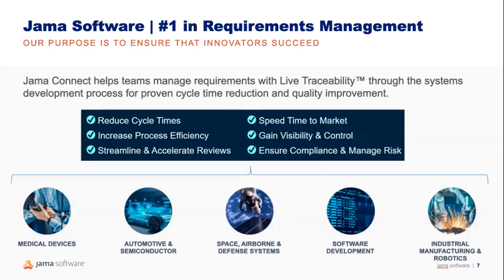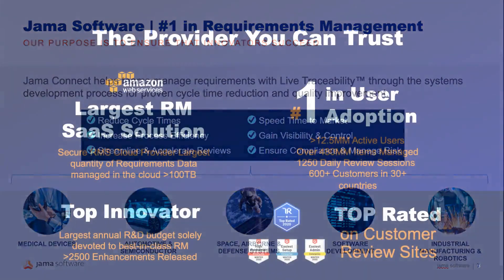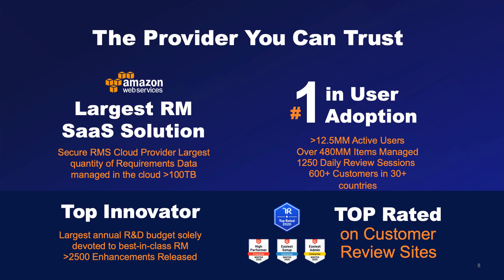I want to briefly provide some context on JAMA Software and what we do. Our main purpose is to ensure that innovators succeed with client success at the forefront of everything that we do. With years of industry-specific experience and thousands of client engagements, we bring best practices to bear to maximize the success rate of the product development process. We work in a number of verticals including medical device, automotive and semiconductor, aerospace and defense software development, and industrial manufacturing and robotics automation.